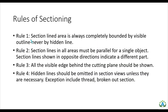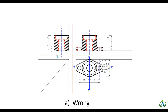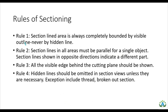Now we can see the rules of sectioning. Rule number 1: the sectioned area is always completely bounded by the visible outline, never by the hidden line. Using a hidden line here would be wrong; we need to use a visible outline instead.